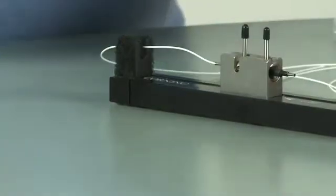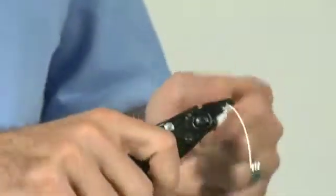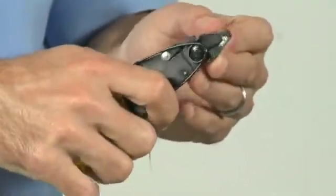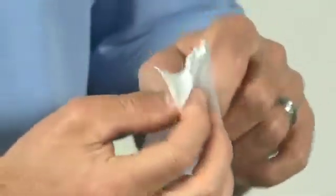Then you move on to your preparation of the other side. Same process of removing the buffer material and the coating and making sure you have a good clean fiber to go into the cleaver and the splice.